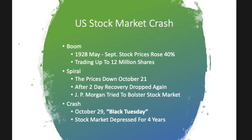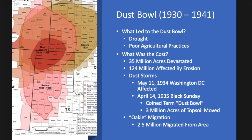While the boom of the 1920s was going on, stock prices were still swinging upward from May through September of 1928, but then they began spiraling downward by October. After a two-day recovery, they dropped again. A private financier, J.P. Morgan, tried to invest his own money into the stock market to keep it afloat, but it wasn't enough. And so on October 29th — Black Tuesday, as it's sometimes called — the stock market crashed, and the depression affected the stock market for about four years.